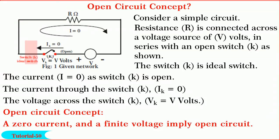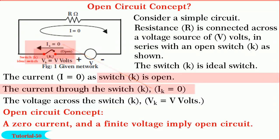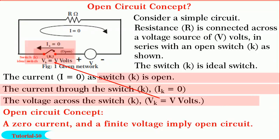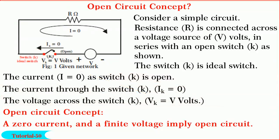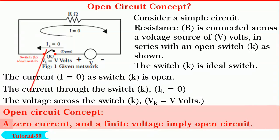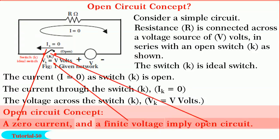Now, observe the facts around the switch K. The switch K is open. Current through it is zero. Voltage across it is V volts, or we can say finite. Hence, open circuit concept states that a zero current and a finite voltage imply open circuit. Hope you understood it.